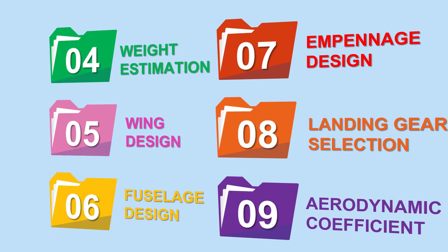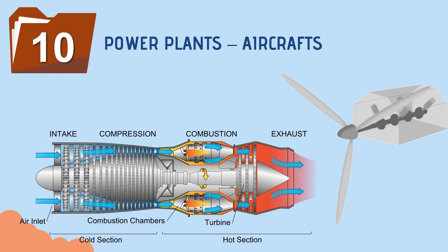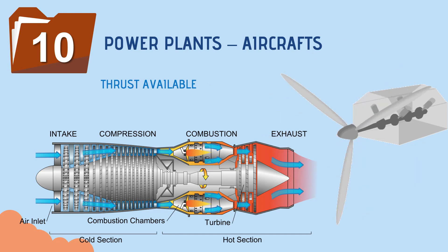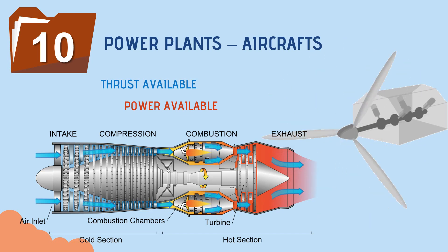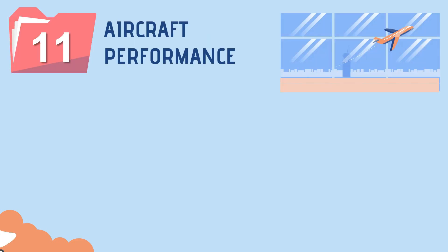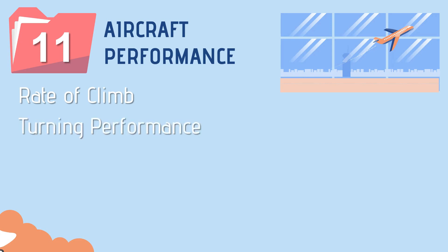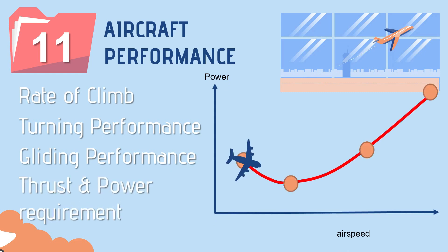Study about power plants used in various aircraft will be focused, predicting the thrust available and thrust power available for the aircraft. Followed with aircraft performance in terms of range and endurance, rate of climb, turning performance, gliding performance, thrust requirement, and power requirement to satisfy landing and takeoff performance through a matching chart.